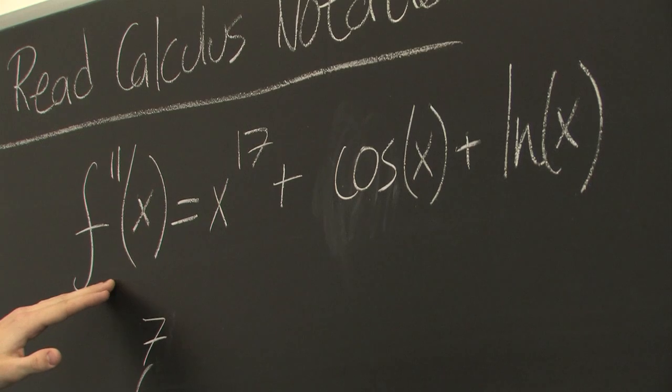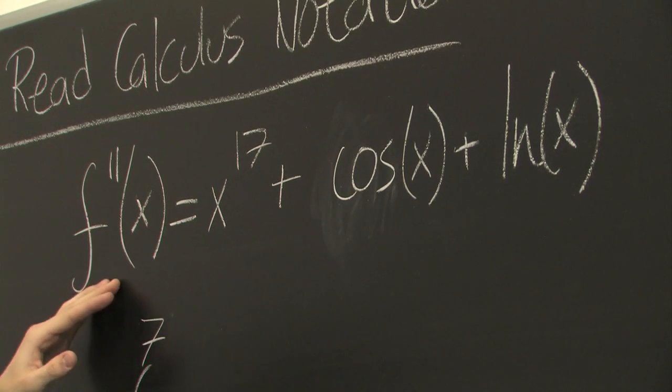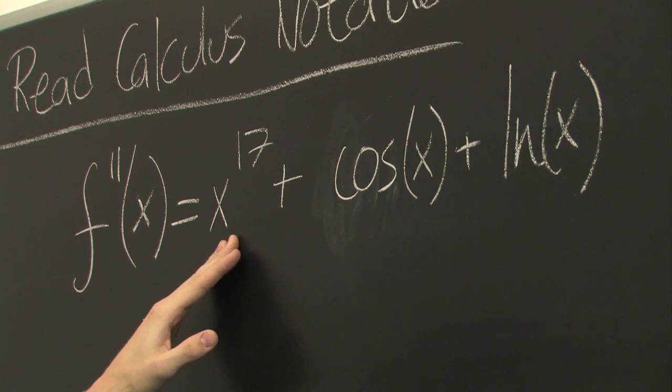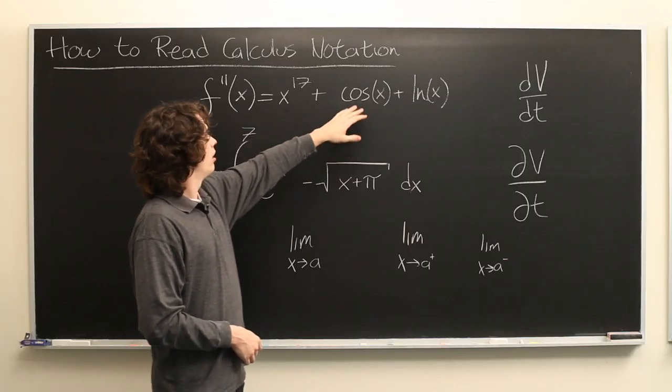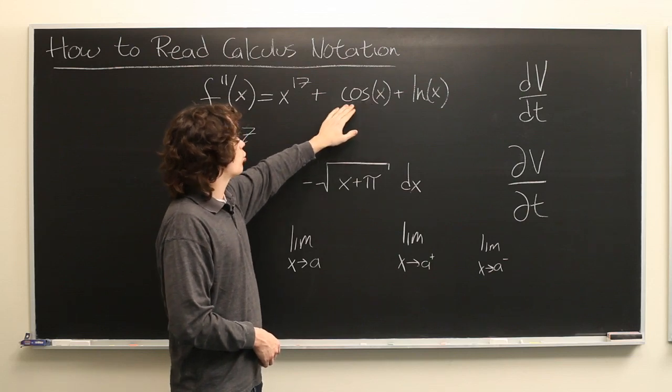So, here we have f', sometimes referred to as the second derivative of x. This is equal to x to the 17th power or simply x to the 17th plus the cosine of x, where this is one of the six trigonometric functions,